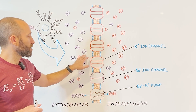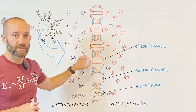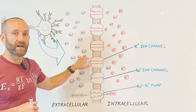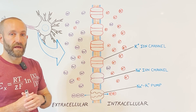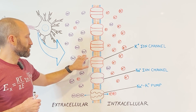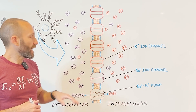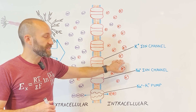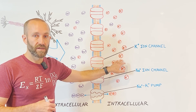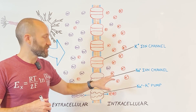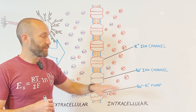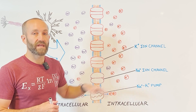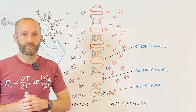Positively charged sodium ions, which are found at greater concentrations outside the neuron, and are represented by these circles with Na+ inside them. And positively charged potassium ions, which are found at greater concentrations inside the neuron, and are represented by the circles with K+ inside them.